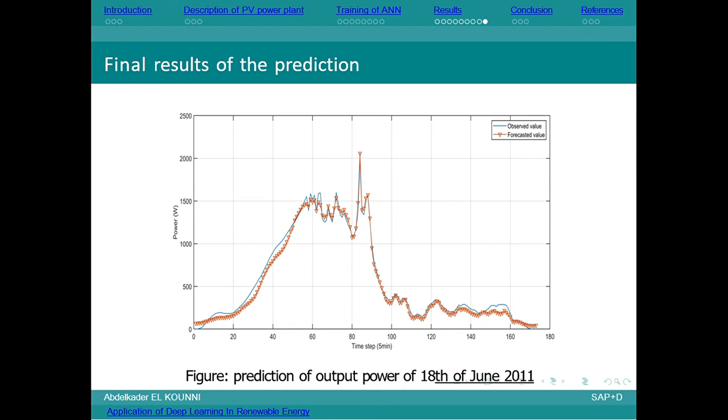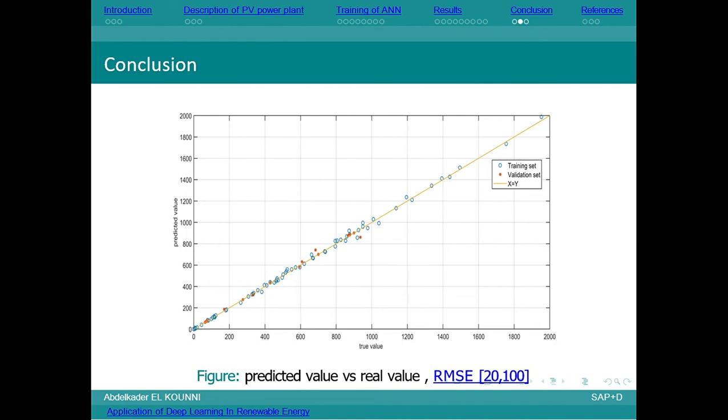The models keep giving good predictions. Here is the correlation between the predicted value and the real value. As it seems, in both validation and training, they have good correlation.